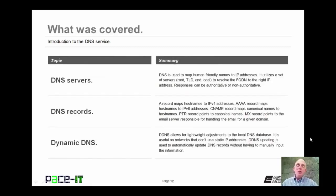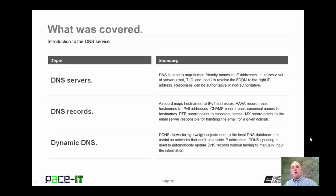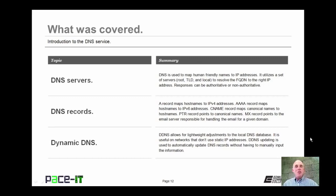DDNS is useful for when access is needed to a domain whose IP address is being supplied dynamically by an ISP or Internet Service Provider — that way the IP address can change but people can still get to the service they're looking for. That concludes this session on the Introduction to the DNS Service. On behalf of PACE IT, thank you for watching this session.